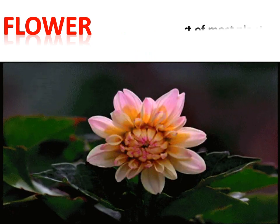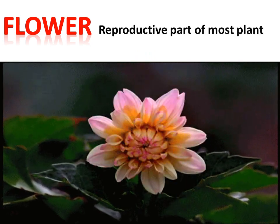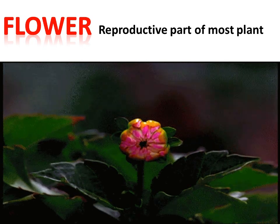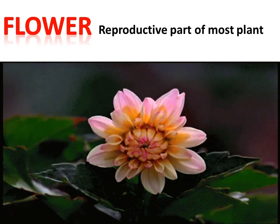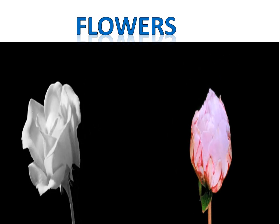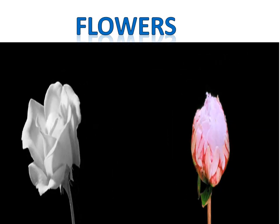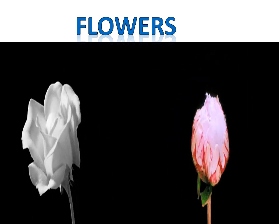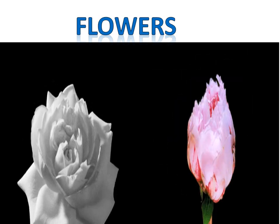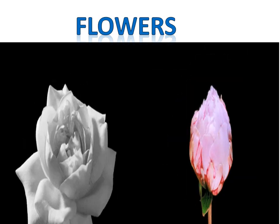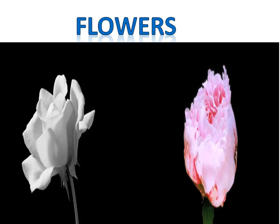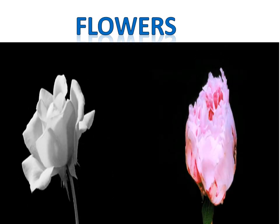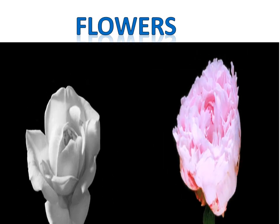Flowers are the reproductive part of most plants. It is in the flower that the seeds start to grow. Their petals are colorful to attract insects. Flowers are found in different sizes and colors — some are white, some are pink or red, like a rose or jasmine. Flowers are the beautiful part of the plant.